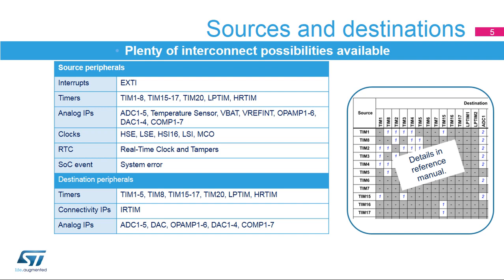This slide indicates the list of source and destination peripherals. Source peripherals are the EXTI, the timers, analog IPs, clocks, RTC, and system error. Destination peripherals are the timers, infrared interface, and analog IPs.